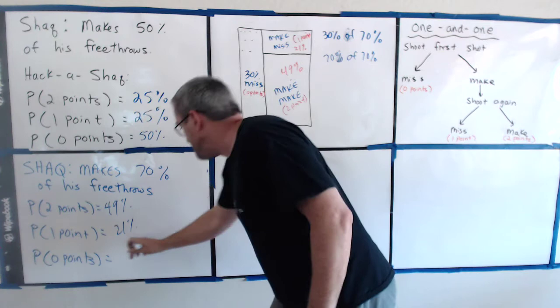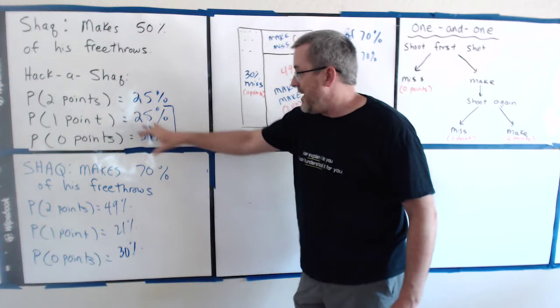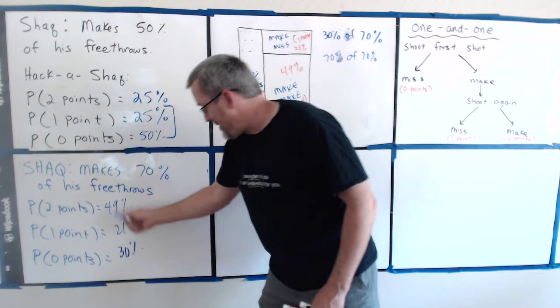So, compared to up here, where 75% of the time, you're getting a 0 or a 1. Now, coaches might look here and say, well, 70% of the time, he's getting a 2 or a 1. The strategy certainly has shifted.